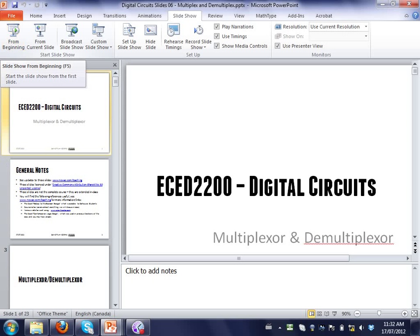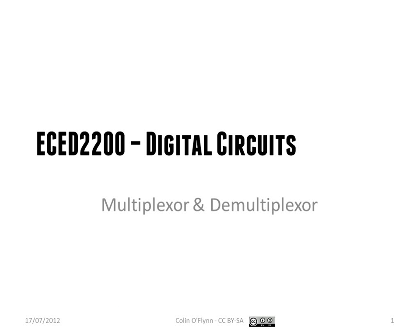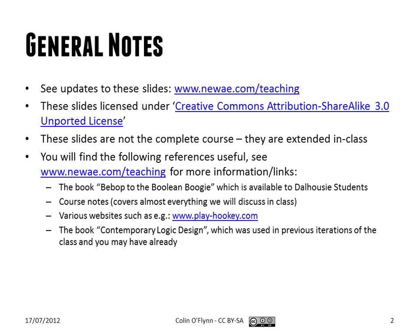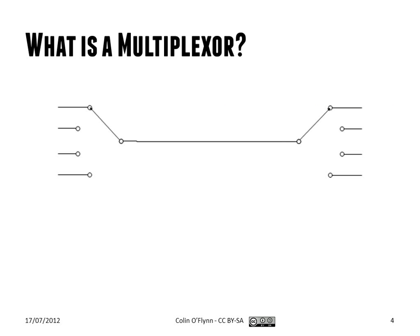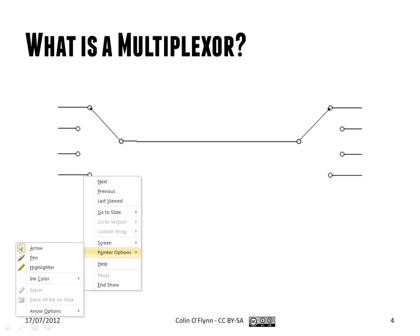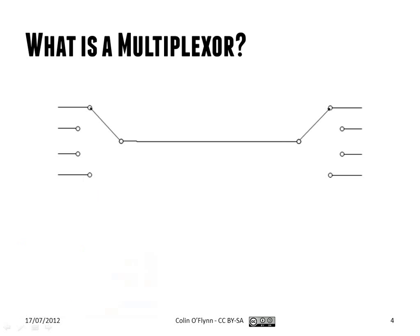Today we'll be talking about multiplexers, demultiplexers, and also briefly about tri-state gates. The multiplexer and demultiplexer idea is quite simple. Imagine we have a four-way switch on each side, because we have a bunch of different data we want to send across a single wire. The multiplexer lets us select which data is actually sent across the wire, and at the other side we can retrieve it.